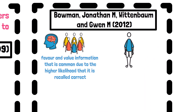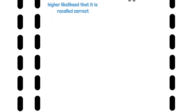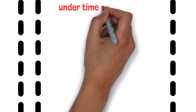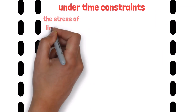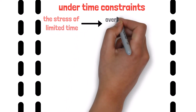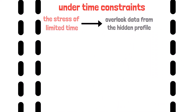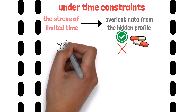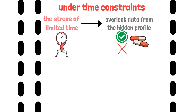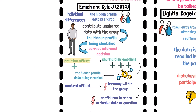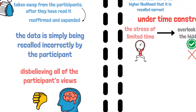Bowman, Wittenbaum, and colleagues in 2012 also repeated the investigation under time constraints and found that the stress of limited time leads the group to overlook hidden profile data, encouraging participants to choose the incorrect option. This was theorized to be due to time constraints placing pressure for a unanimous decision, linking back to Emich and Kyle's 2014 theory — the positive affect gained from agreeing with the common shared data.